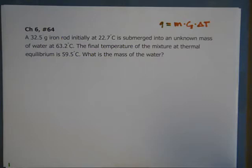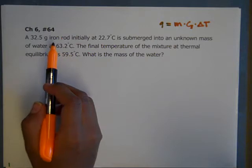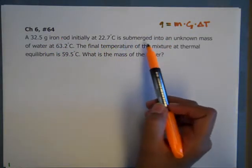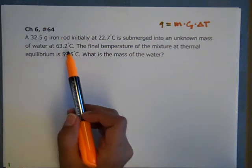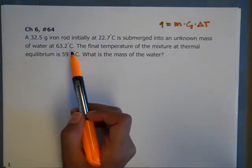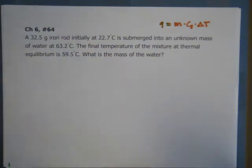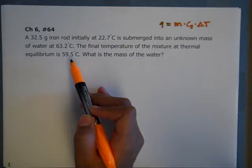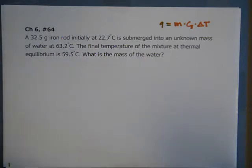So this problem is involving a 32.5 gram iron rod that is initially at 22.7 degrees Celsius, and it's submerged into an unknown mass of water that is at 63.2 degrees Celsius. And then the final temperature of the mixture at equilibrium is 59.5. So we want to know the mass of the water that the rod was put into.